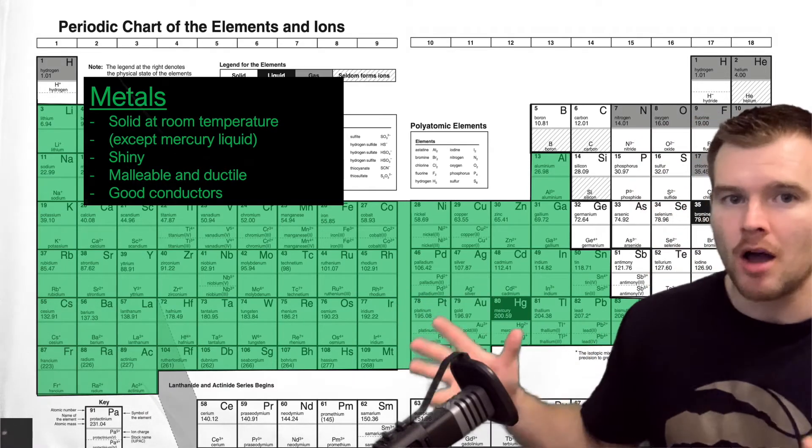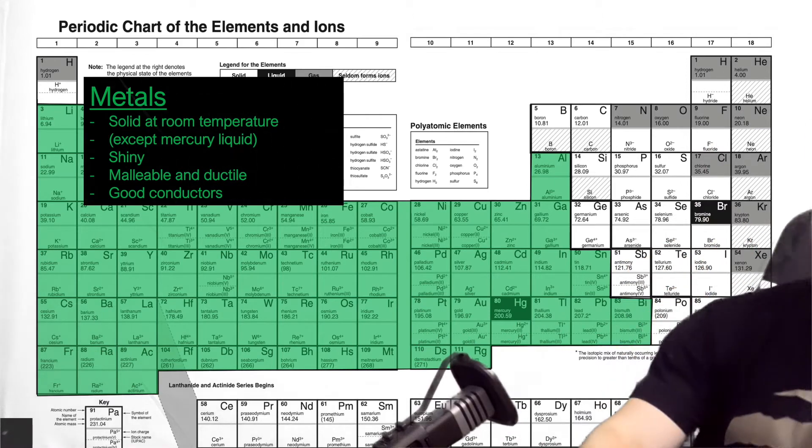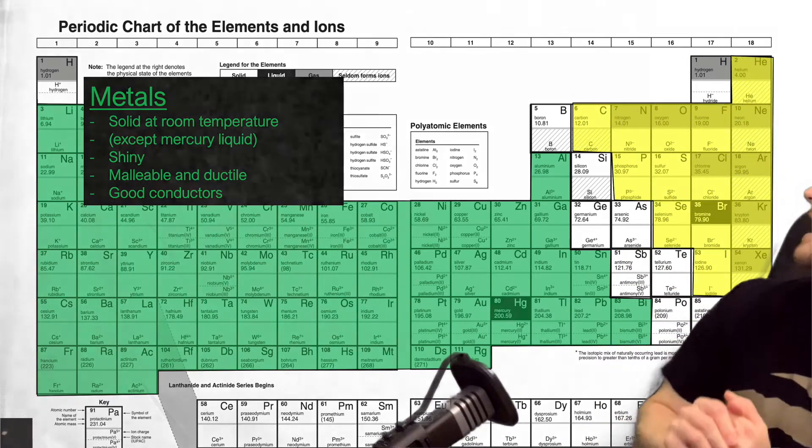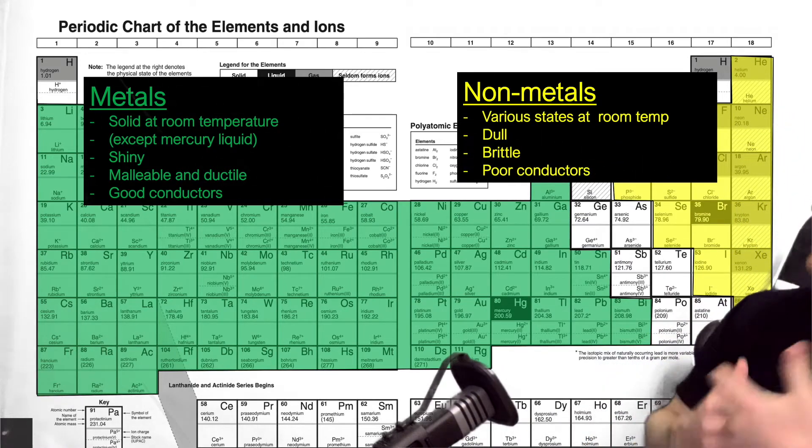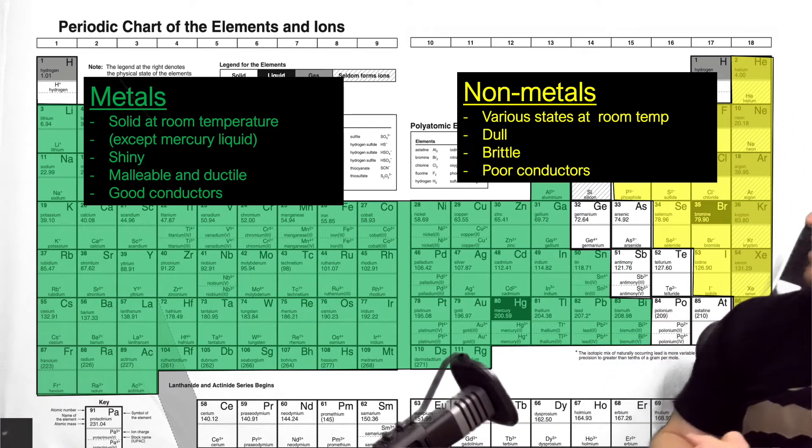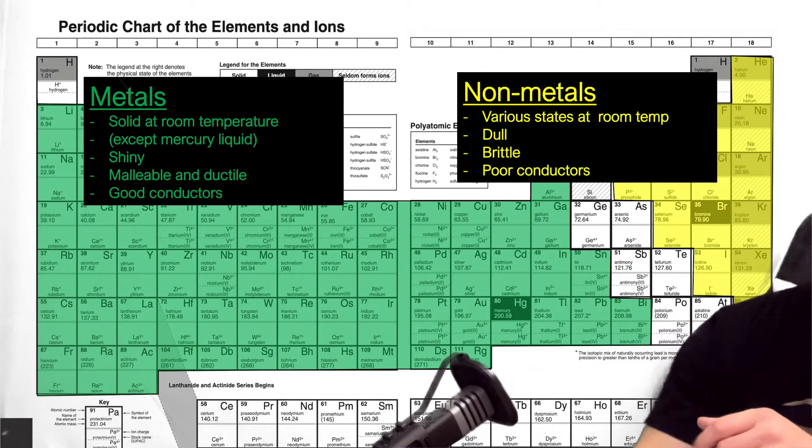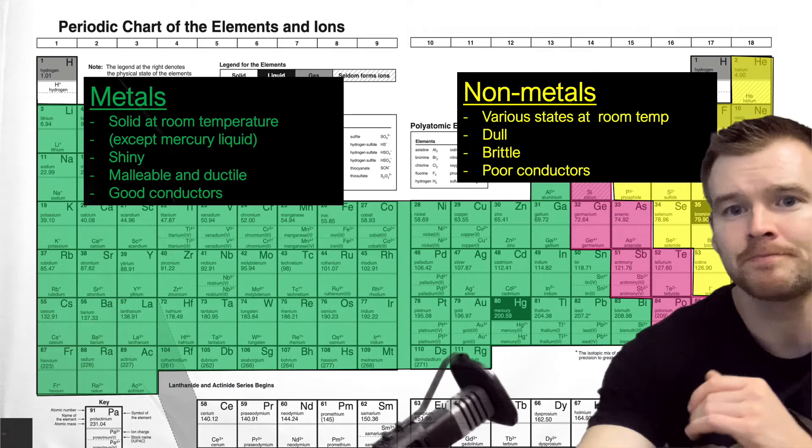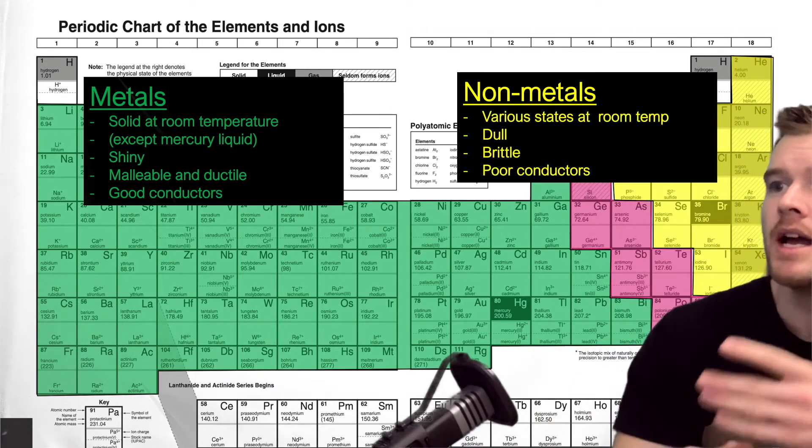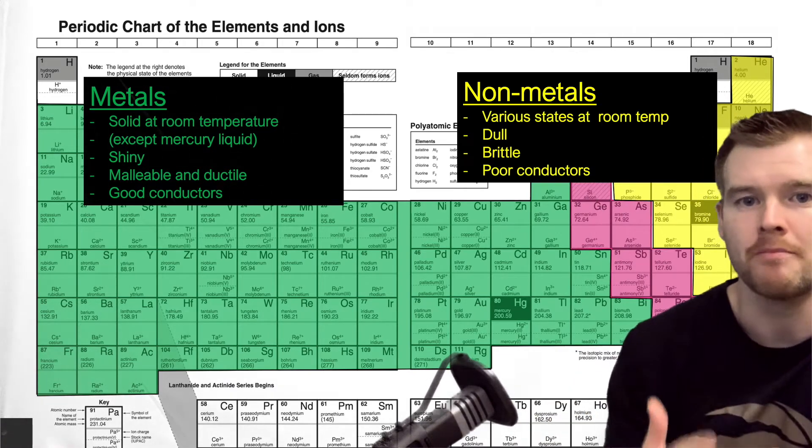Now, those are all the metals. The opposite to those over here are the non-metals, so I'll shade that in yellow. They're kind of the opposite of metals, so they are various states at room temperature. There's some solids, some liquid bromine, and then also lots of gases. And they're dull, brittle, and poor conductors, so really the opposite of metals.